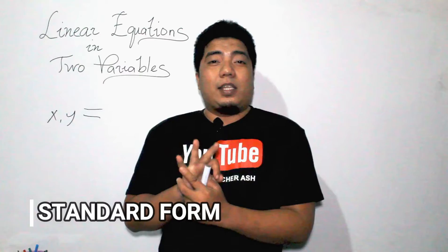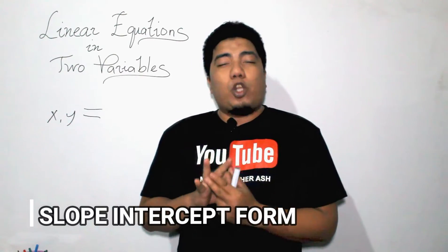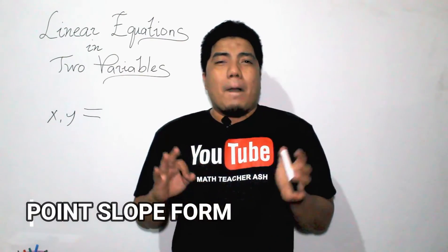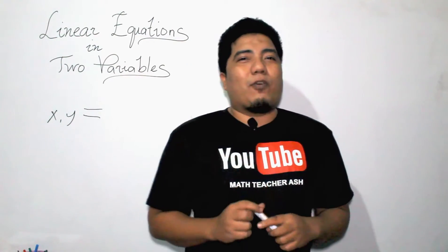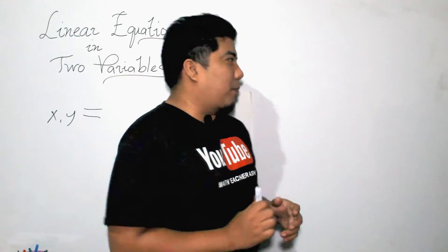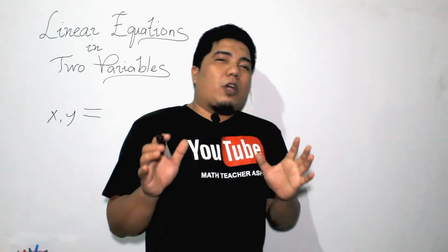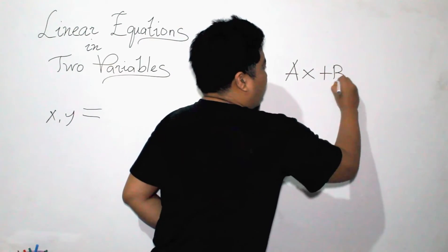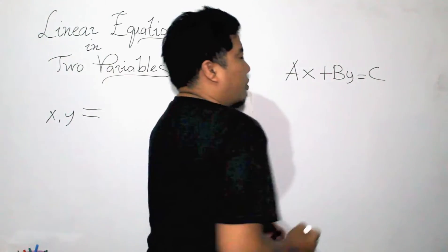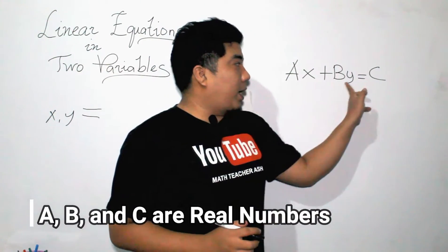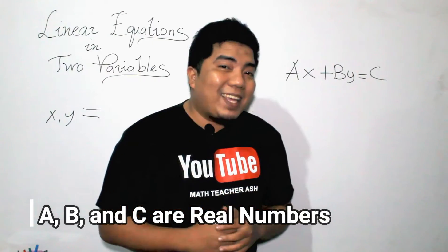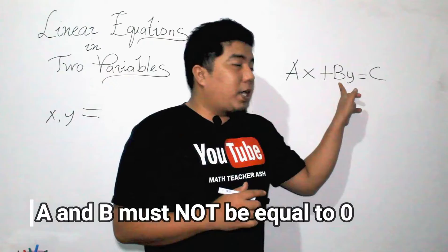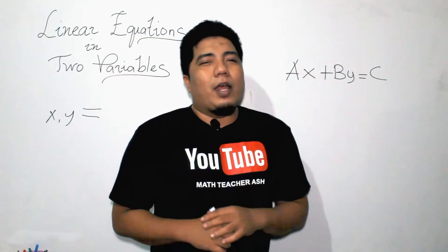The first one is the standard form. The second one is the slope-intercept form. And the third one is the point-slope form. But for today, let's be focused on the standard form. The linear equation in two variables has the standard form ax plus by is equal to c, in which a, b, and c are all real numbers, x and y are the variables, and a and b should not be equal to zero.